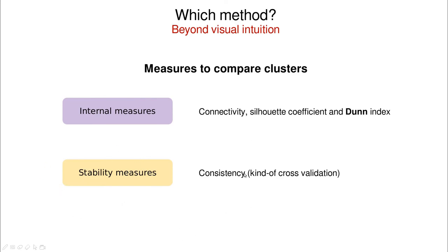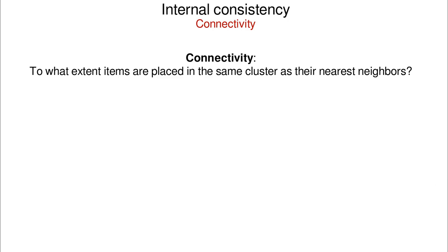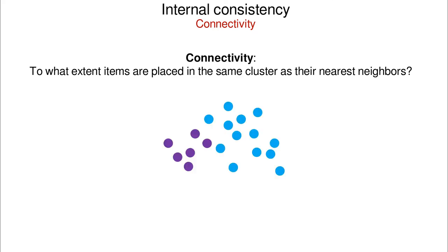Stability measures try to find consistency, which is a kind of cross-validation. The first internal idea is connectivity: it measures to what extent items are placed in the same cluster as their nearest neighbors. Imagine a situation where some points are in different clusters but their nearest neighbor is actually in the other cluster — this is a fuzzy region where you're not sure which cluster a point belongs to. Connectivity is a quantitative measure of that.